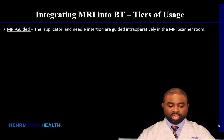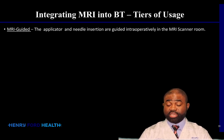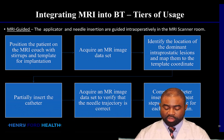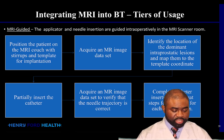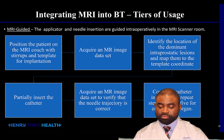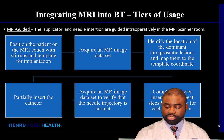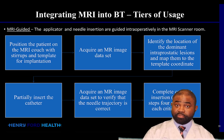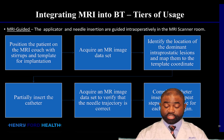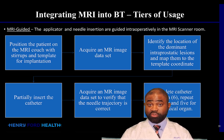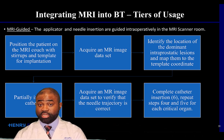For MRI-guided, the applicator and needle insertion are actually guided intraoperatively in the MRI scanner room. Using a prostate patient as an example: the patient is positioned on the couch in the MRI scanner, an MRI image dataset is taken, the image dataset is used to locate the dominant intraprostatic lesions which are mapped onto the template. The catheters are partially inserted, then another image set is taken. The second image set is used to verify that the trajectory of the needle is correct, and if not, they are adjusted before the catheters are completely inserted.